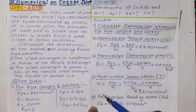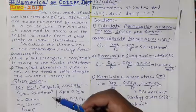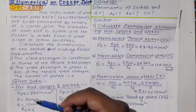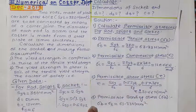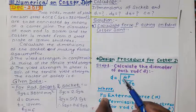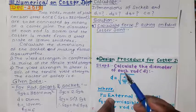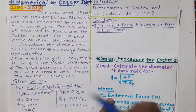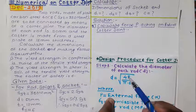After calculating the four permissible stresses, we have to find out the force P, which is not given in the numerical statement. The diameter of the rod, d, is given, but force P is not given. So let us calculate force P acting on the rods of the cotter joint.